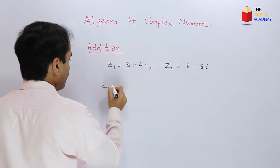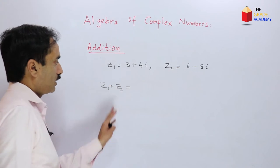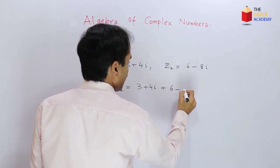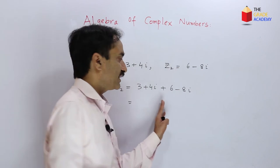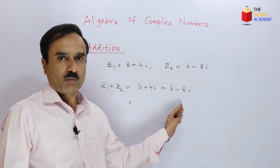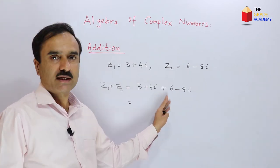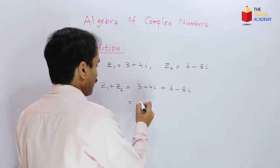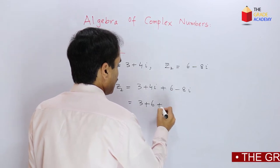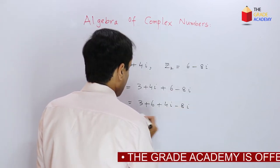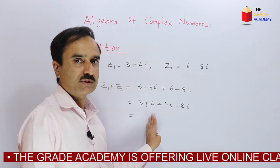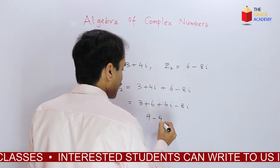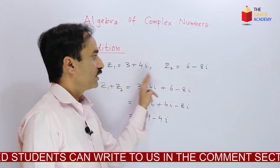We have to find z1 plus z2, which means 3 plus 4i plus 6 minus 8i. This addition can be done by collecting the like terms and then simplifying. Rearranging: 3 plus 6, plus 4i minus 8i. So 3 plus 6 is 9 and 4i minus 8i is minus 4i. The sum of these two complex numbers is 9 minus 4i.